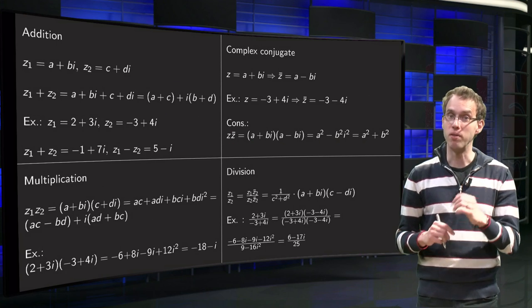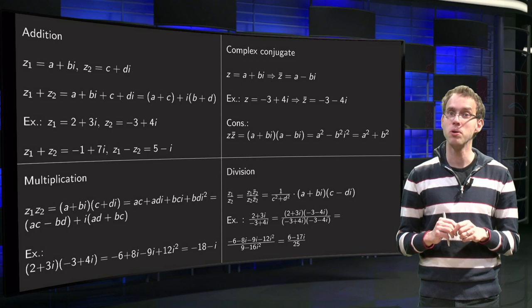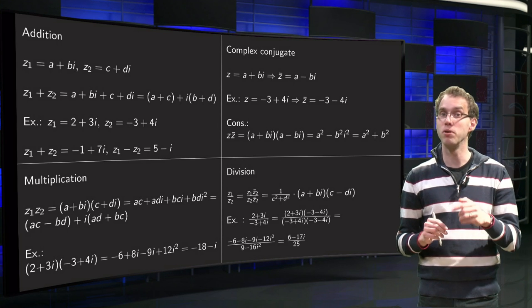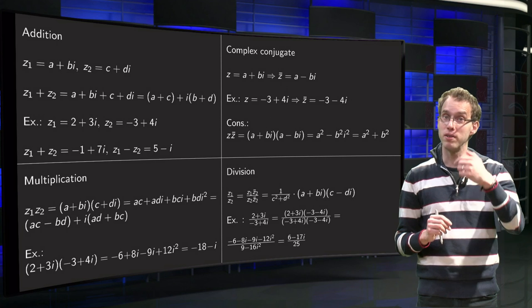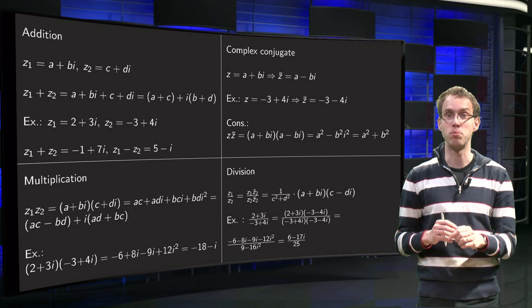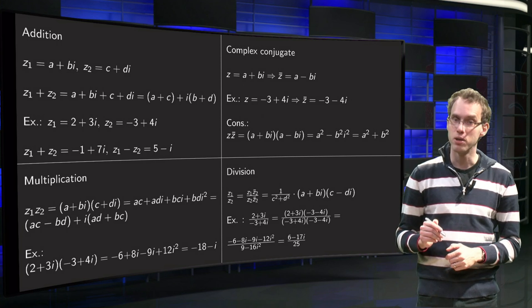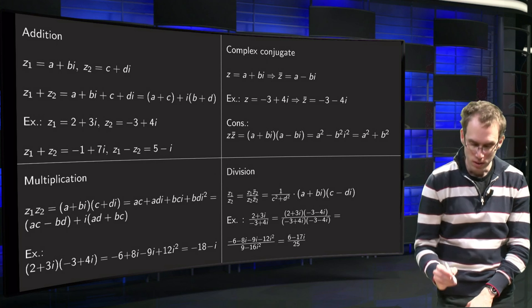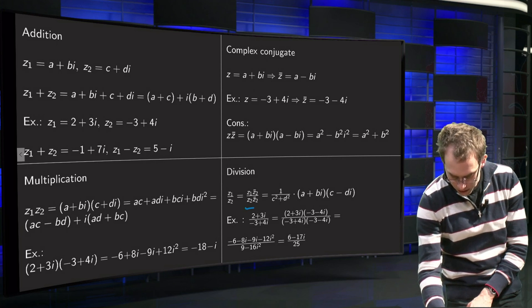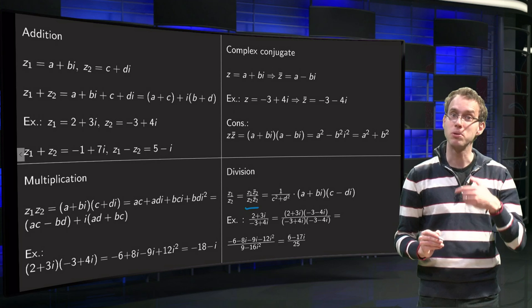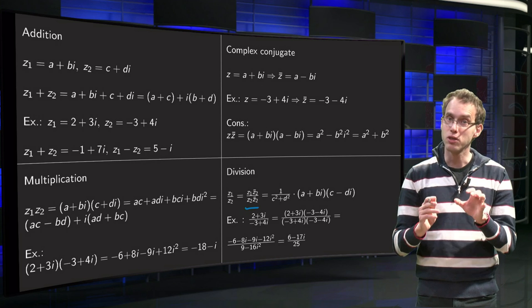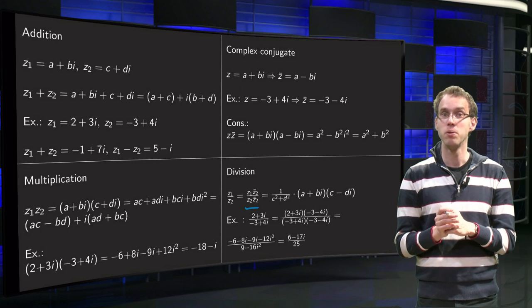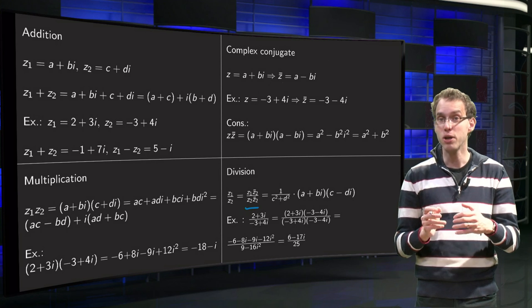So how can we divide two complex numbers, z1 over z2? Well, the trick is to multiply with 1, to multiply with z̄2 divided by z̄2, that is 1. And why do we want to do that? Well, then in the denominator you get z2 times z̄2, and that quantity in the denominator will become a real quantity.